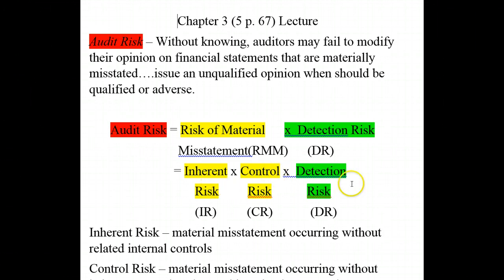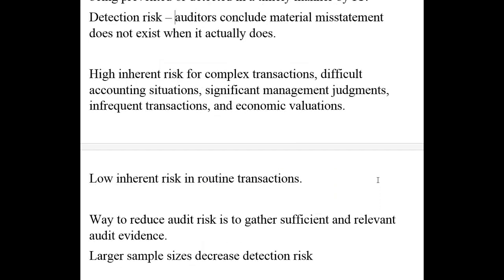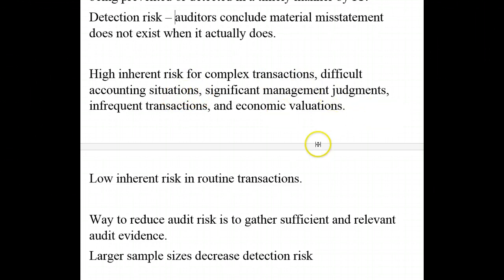Detection risk, control risk, and inherent risk — those three components make up audit risk. Audit risk is that we would fail to modify our opinion when a material misstatement had occurred. There is a higher inherent risk for complex transactions, difficult accounting situations, significant management judgments, infrequent transactions.